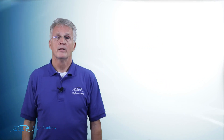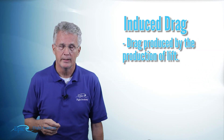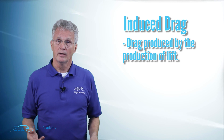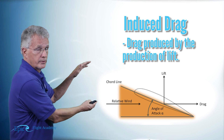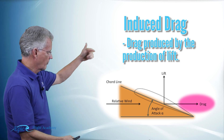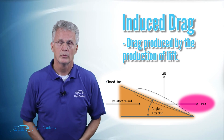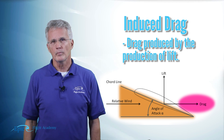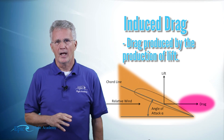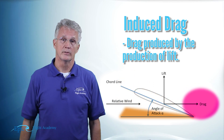The second type of drag is induced drag. Induced drag is interesting — it is produced by the production of lift. Lift is the force created by the angle between the chord line and the relative wind. The drag caused by the production of this lifting force is called induced drag. The higher the angle of attack, the greater the induced drag. The smaller the angle of attack, the less the induced drag.